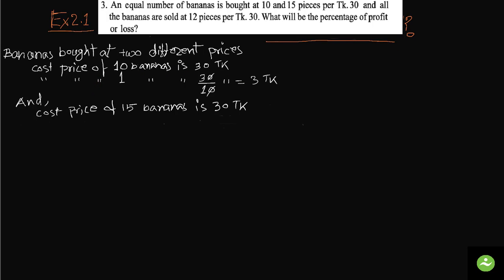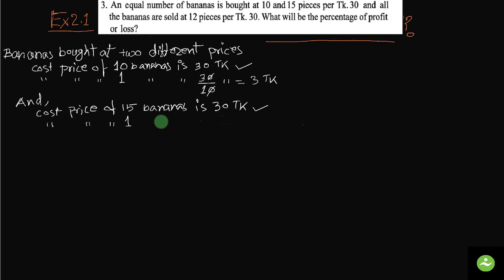Now we can see two different prices. The bananas were bought at two different prices. The cost price of 10 bananas is 30 taka — that is one rate. And the cost price of 15 bananas is 30 taka — that is another rate. So for one banana the price is 3 taka. Here, the cost price of 1 banana is 30 divided by 15 taka, which equals 2 taka.